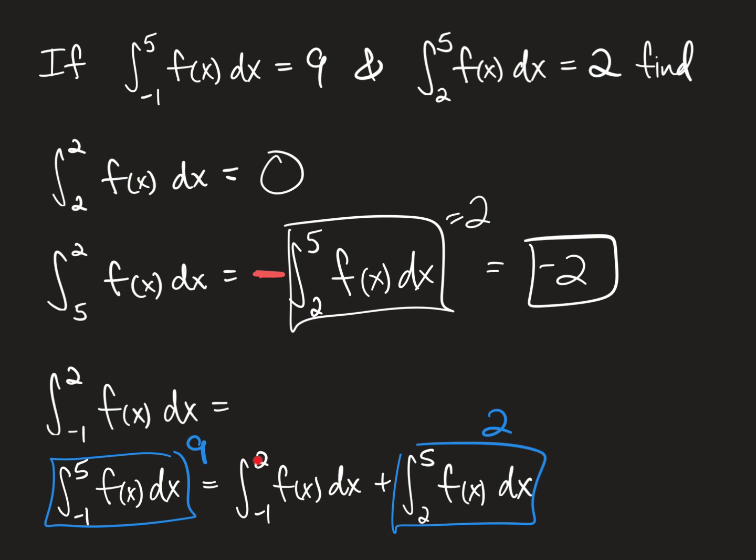So in order to solve for this integral, all we have to do is subtract two from both sides. So nine minus two would be seven. And that makes sense. If you substitute seven in for this entire integral, seven plus two is nine.